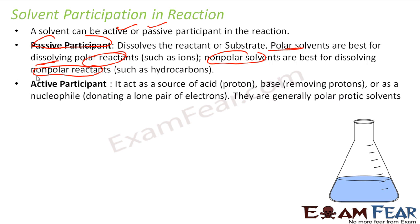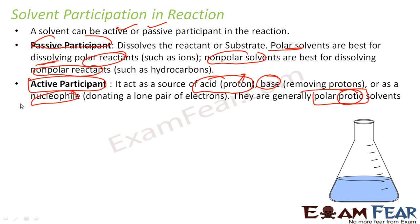But solvents sometimes act as active participants also, and this really happens in the case of polar protic solvents. Why? Because since it is protic, it acts as a source of proton. Or sometimes it acts as a base and removes protons. Sometimes it acts as a nucleophile also, because it can donate a lone pair of electrons. So when it is a polar protic solvent, you have to be careful — things can be tricky. Sometimes they bind the nucleophile and make it weak. Sometimes they act as an acid source. So the moment you have a polar protic solvent, you have to think carefully.